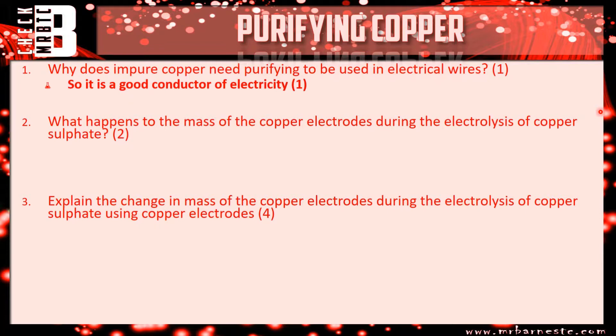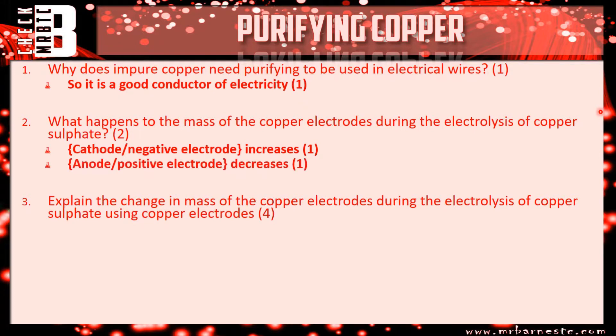Question two, what happens to the mass of the copper electrodes during electrolysis? The cathode is your negative one, so your copper ions are going to go to that, therefore the cathode will increase. If the cathode is increasing, the anode will decrease. So one mark for cathode or negative electrode increases in mass, and one mark for the anode decreases.